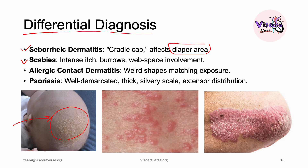We also think about scabies, which presents with intense itching. However, we see burrows and web space involvement between the fingers. Allergic contact dermatitis presents in weird shapes matching the exposure — for example, a patient wearing a shirt with a dinosaur print presented with a lesion that matched the shape on their t-shirt.